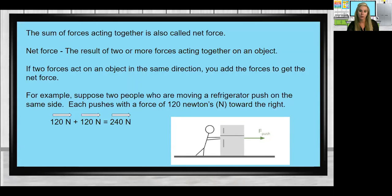Each pushes with a force of 120 Newtons towards the right. So if you look at my mathematical formula here, I did 120 Newtons for person one and 120 Newtons for person two and they're both pushing to the right with a total of 240 Newtons.